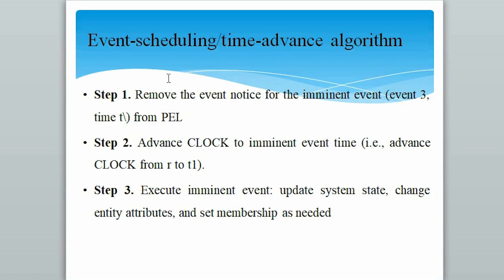The event scheduling algorithm has five steps in it. Step 1 is to remove the imminent event from the PEL. Step 2 is to advance clock to the imminent event time. Step 3 is to execute the imminent event and update system state, change entity attributes, and set membership as needed.